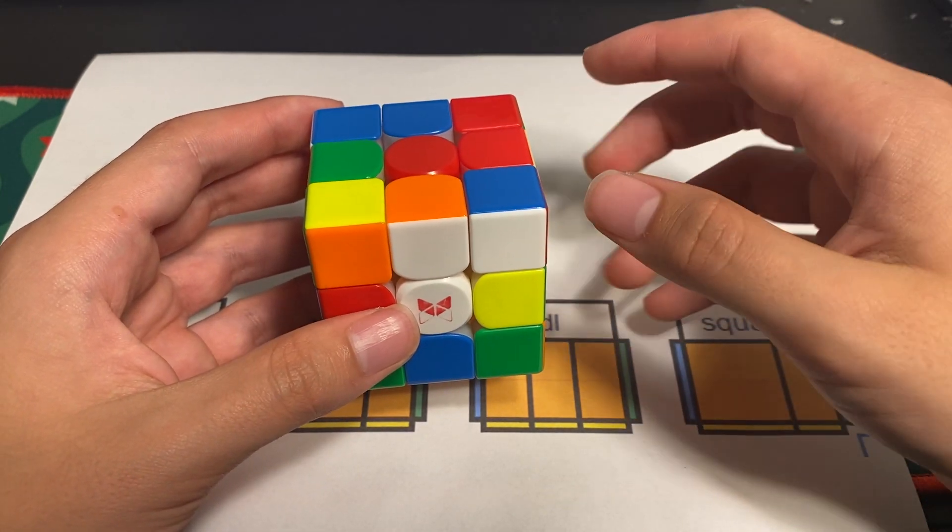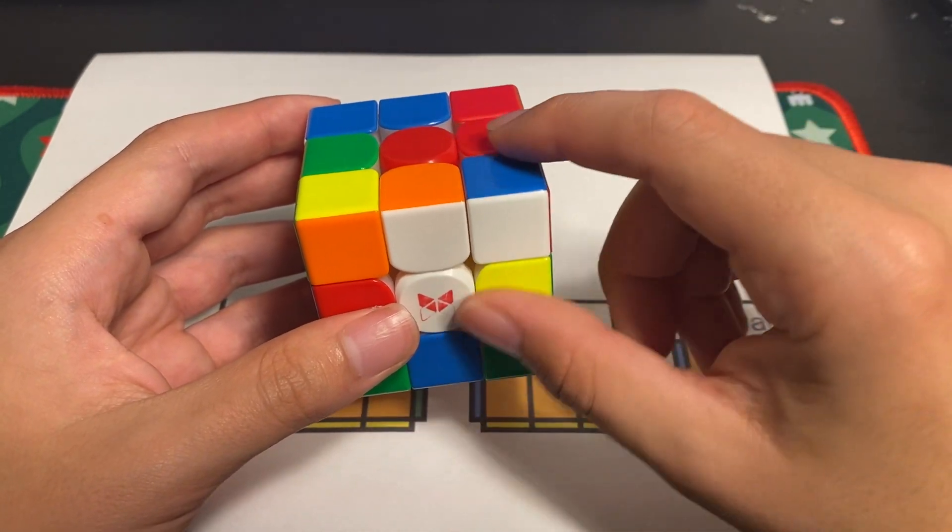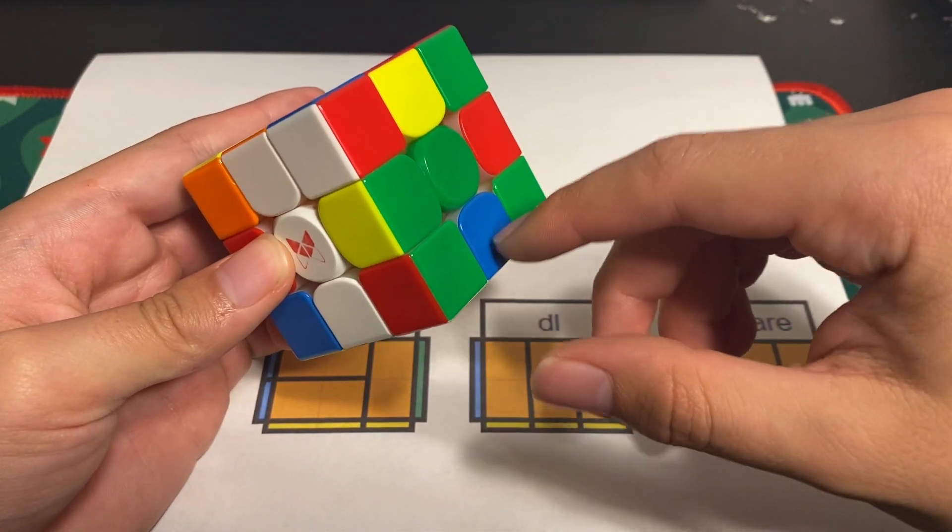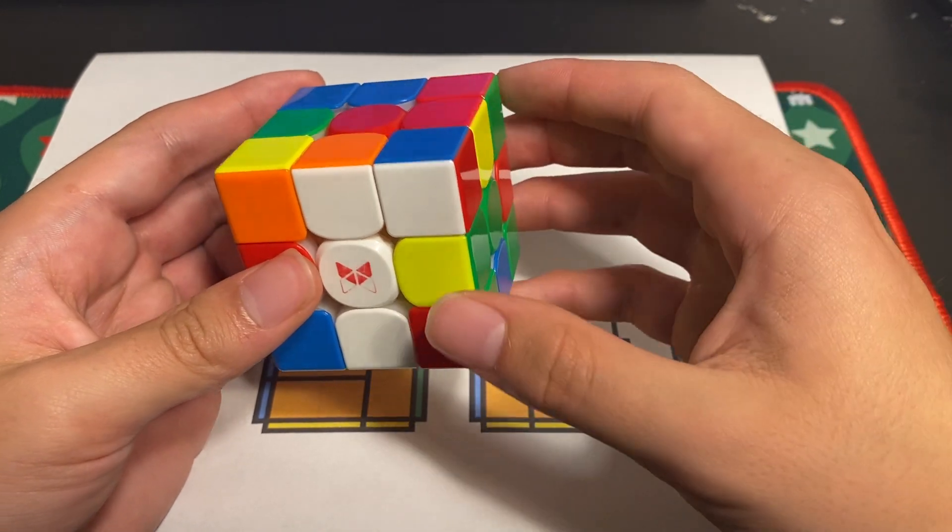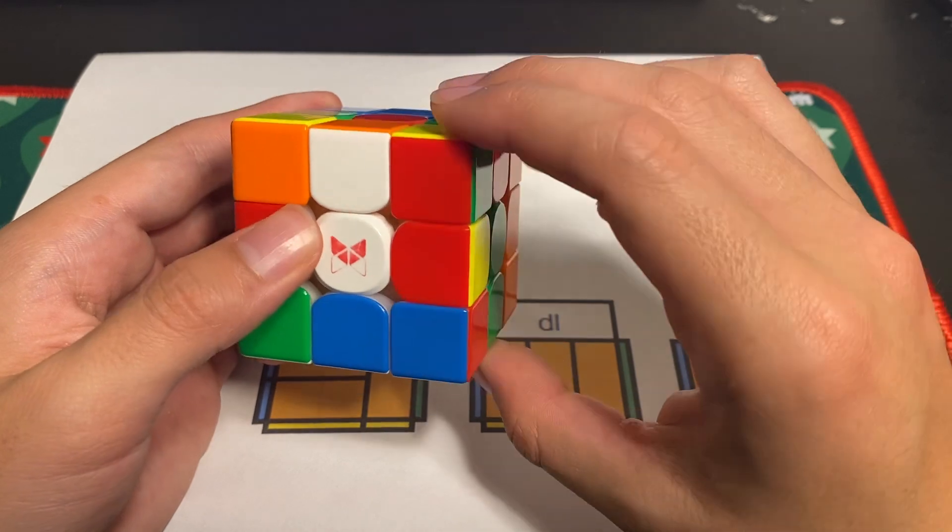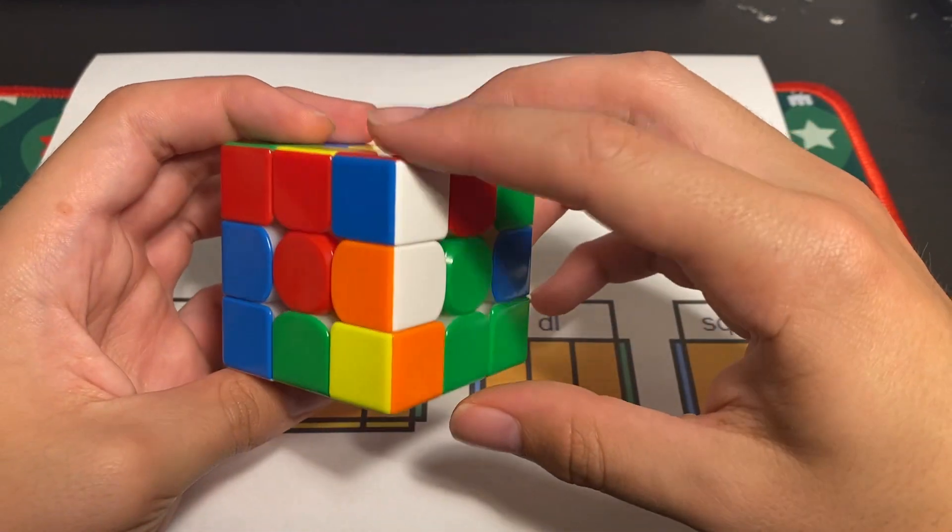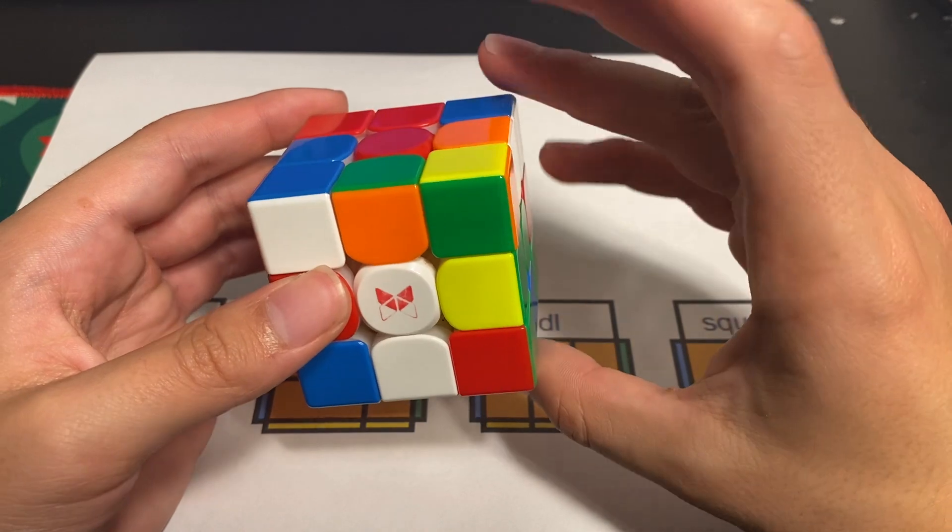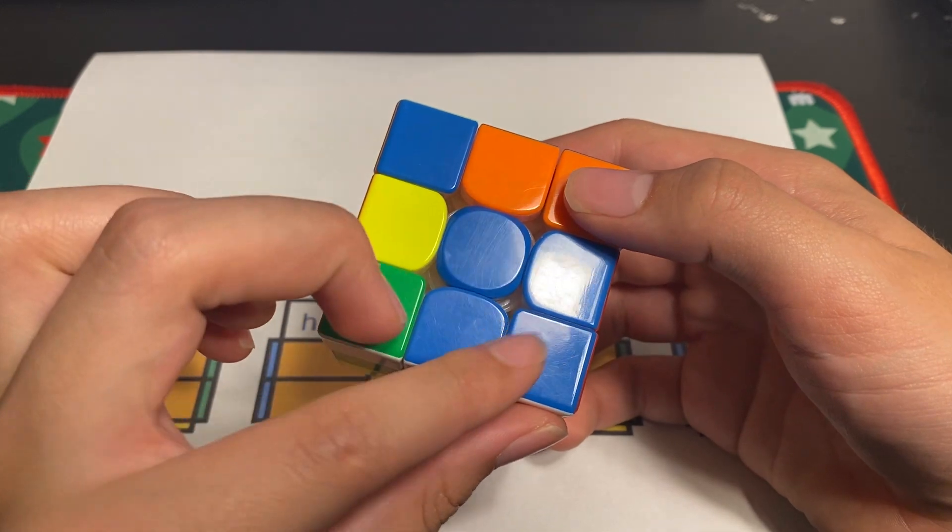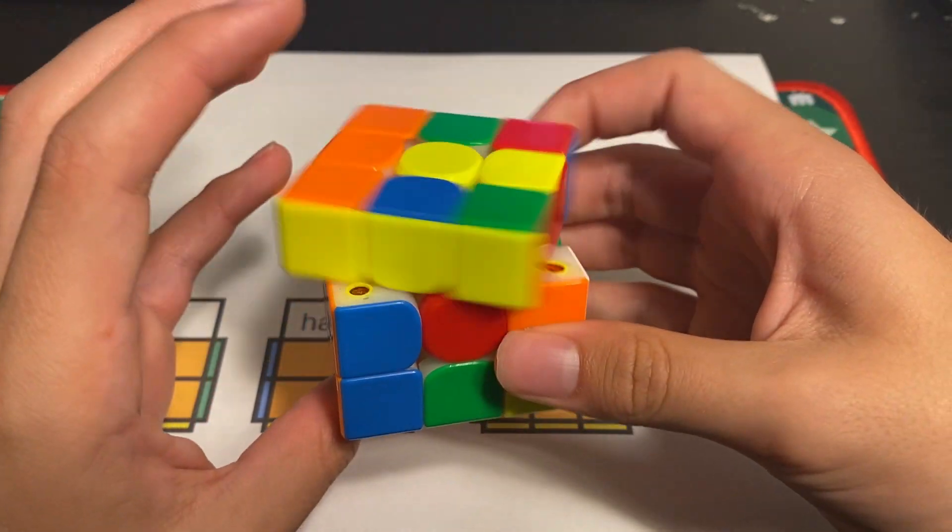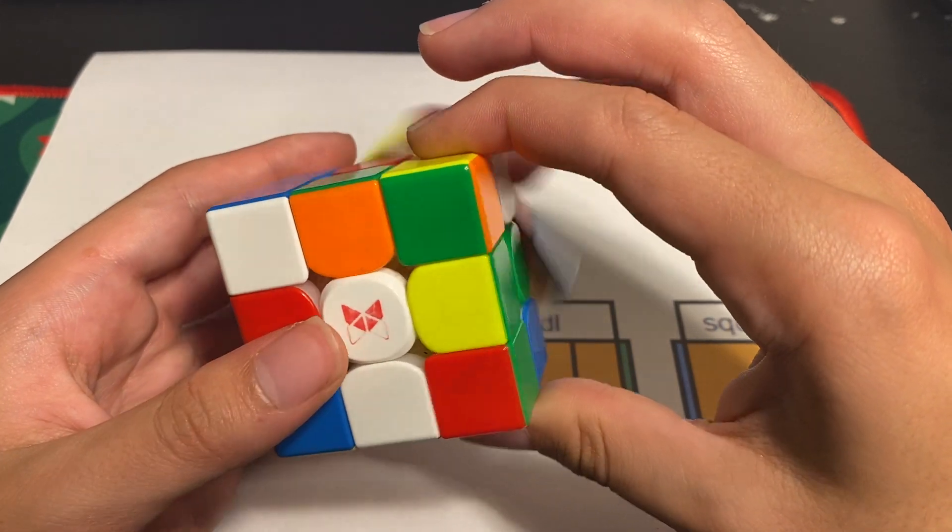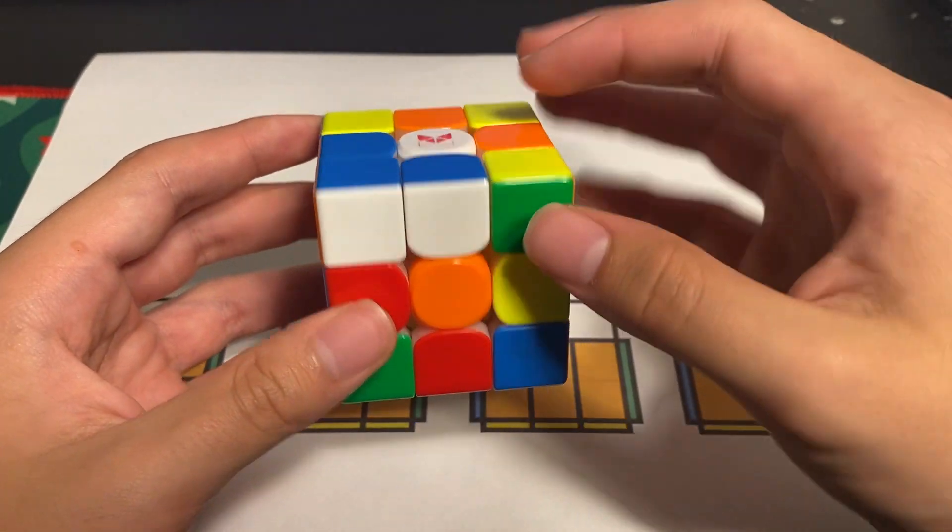Some important things to note are you can build this half line from anywhere. So if the DL were over here per se then I could do D prime and then like this. Or if both the corner and the DL were over here I could do a B prime and then a D2 and it would still build this square over here for me.